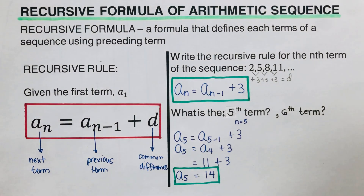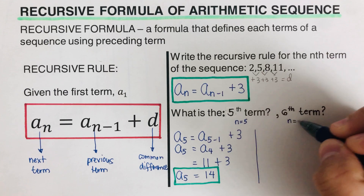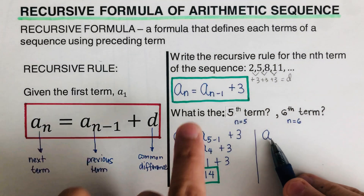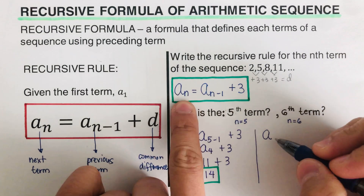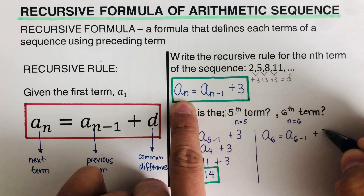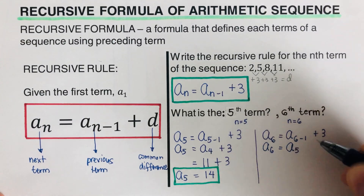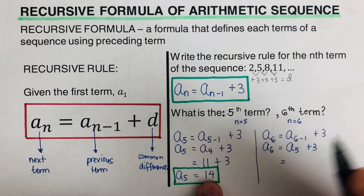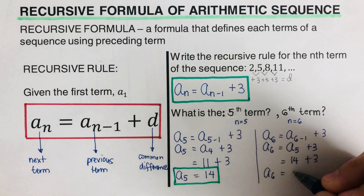Now let's find the sixth term. We label n as 6, then write the equation: a sub 6 is equal to a sub 6 minus 1 plus 3, which becomes a sub 6 equals a sub 5 plus 3. We already solved a sub 5, which is 14, so 14 plus 3 gives us a sub 6 equals 17.